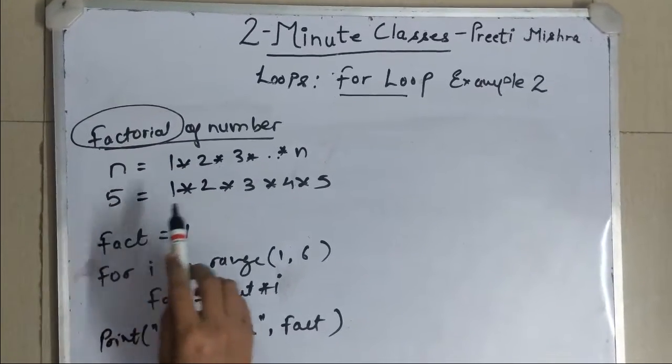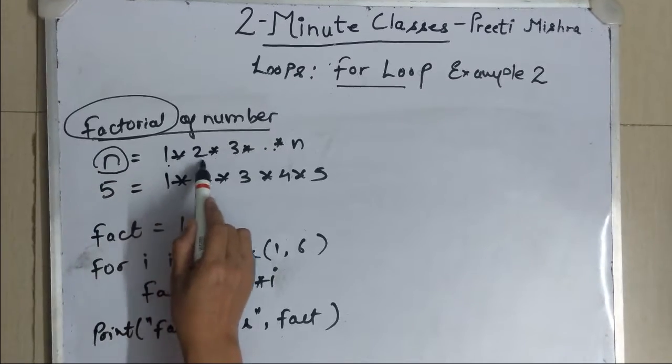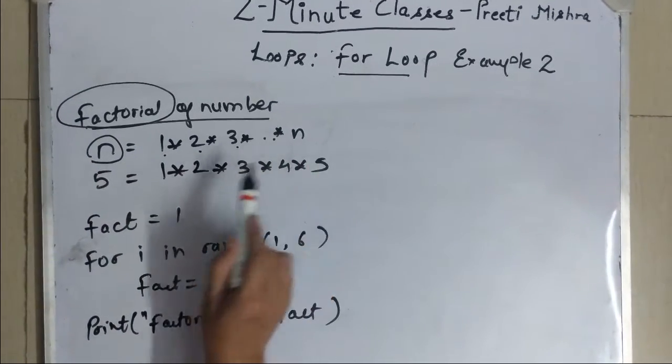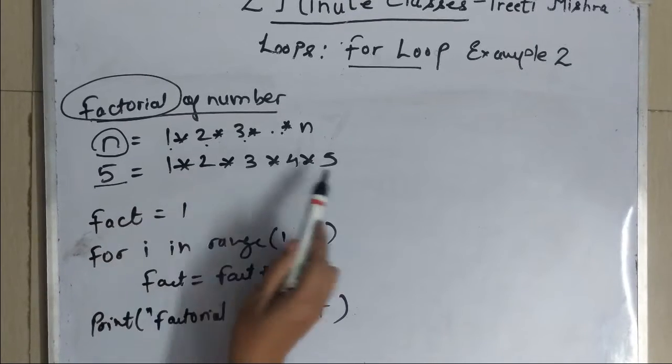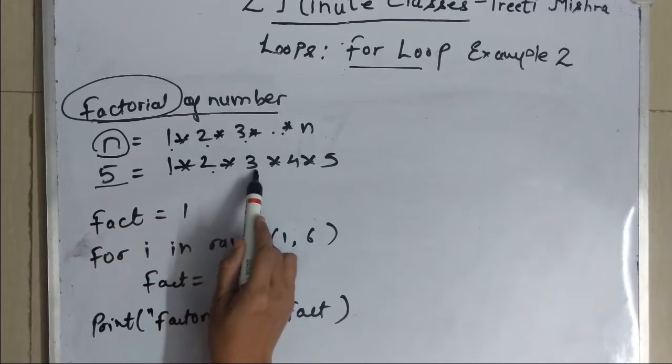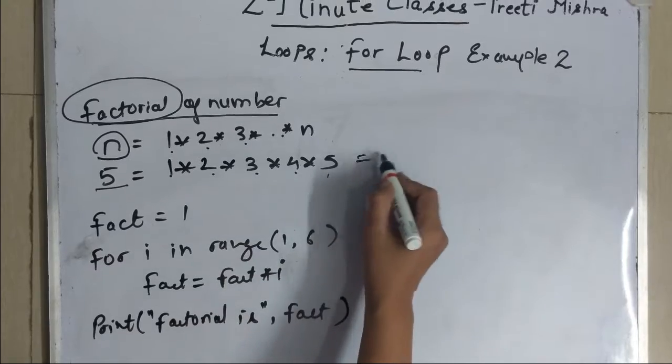We are aware that factorial of a number n is 1 into 2 into 3 till n. Suppose I want to find factorial of 5. It will be the product of 1 into 2 into 3 into 4 into 5 that is equal to 120.